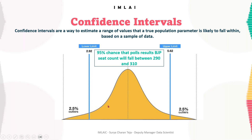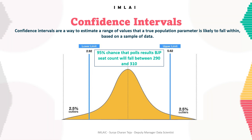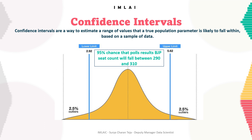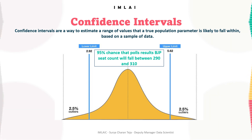This means that if you repeated the sampling process many times and calculated a confidence interval for each sample, you would expect 95% of those confidence intervals to contain the true average height of all people in the country. Confidence intervals provide a way to estimate the uncertainty associated with a sample estimate and to assess the precision of the estimate. They are useful for making inferences about a population based on a sample of data and for comparing different groups or treatments.